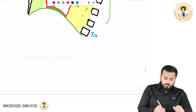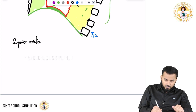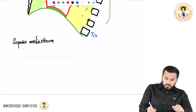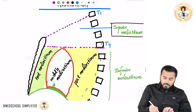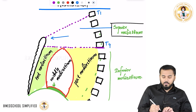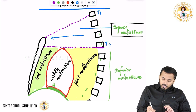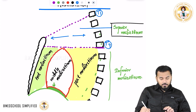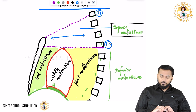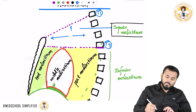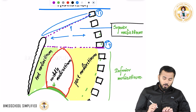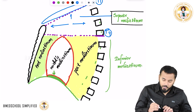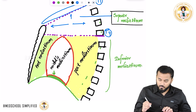In the superior mediastinum we have some important structures. Anteriorly you have the sternum. Posteriorly you have the thoracic vertebrae from T1 to T4 — meaning the lower surface of T4. Superiorly there is an opening called the superior thoracic aperture. Inferiorly you have a line passing from the sternum to the lower border of T4.